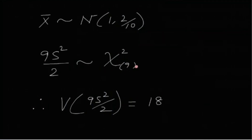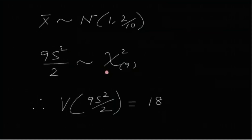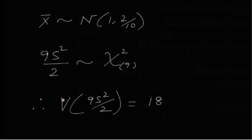So 9S²/2 follows chi-square with 9 degrees of freedom. Note: it is not S² itself but (n−1)·S²/σ² that follows chi-square(n−1). We can consider 9S²/2 as a random variable. For a chi-square(n) distribution, the variance equals twice the degrees of freedom. So the variance of 9S²/2 is 2×9 = 18.